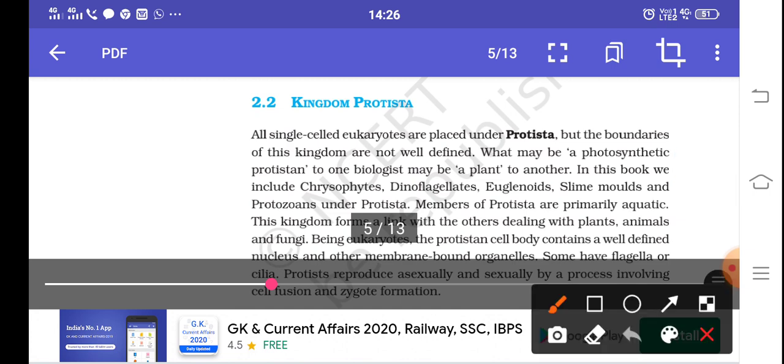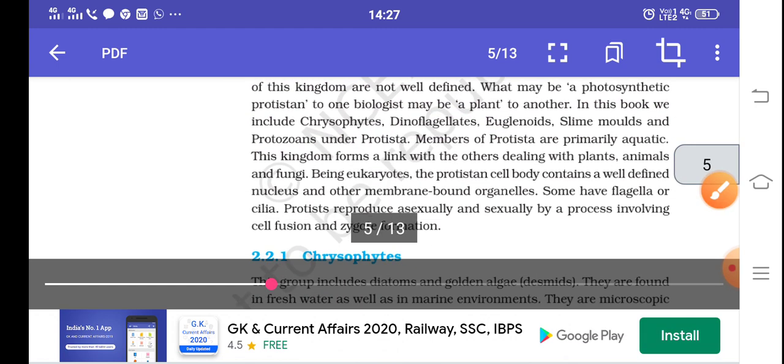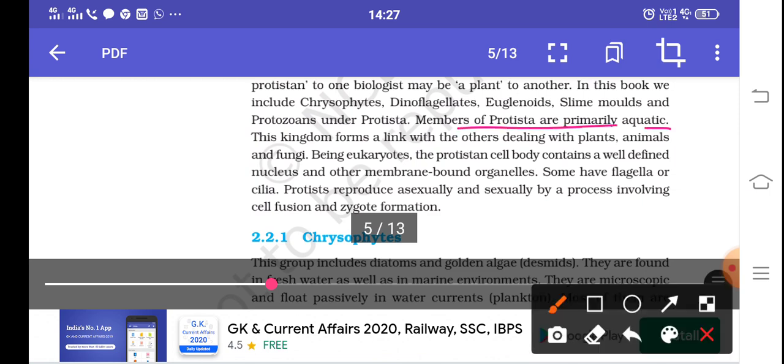So with that, our Kingdom Monera gets finished. The next single-celled organism kingdom is Protista. But these are all eukaryotic, well-developed cells with well-defined boundaries. Photosynthetic protists also exist and they mimic like plants. They are called chrysophytes, dinoflagellates, euglenoids, slime molds, and protozoans. Members of Protista are primarily aquatic. They form a link between plants, animals, and fungi. Because they are eukaryotic, their cells have well-defined nucleus and membrane-bound organelles.